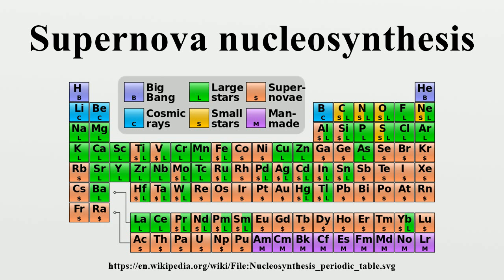The supernova explosion releases a large burst of neutrons, which synthesizes in about one second while inside the star roughly half of the supply of elements in the universe that are heavier than iron, via a neutron capture mechanism known as the R-process. Stars with initial masses less than about eight times the Sun never develop a core large enough to collapse. This limits their yield to interstellar gas to carbon, nitrogen, and to isotopes heavier than iron by slow capture of neutrons.